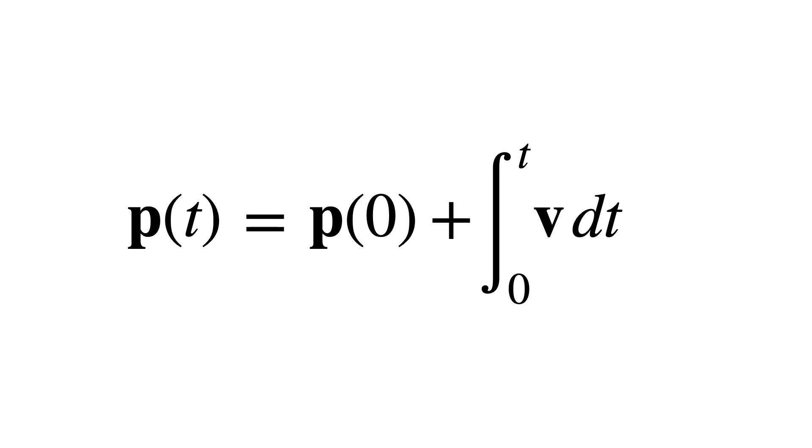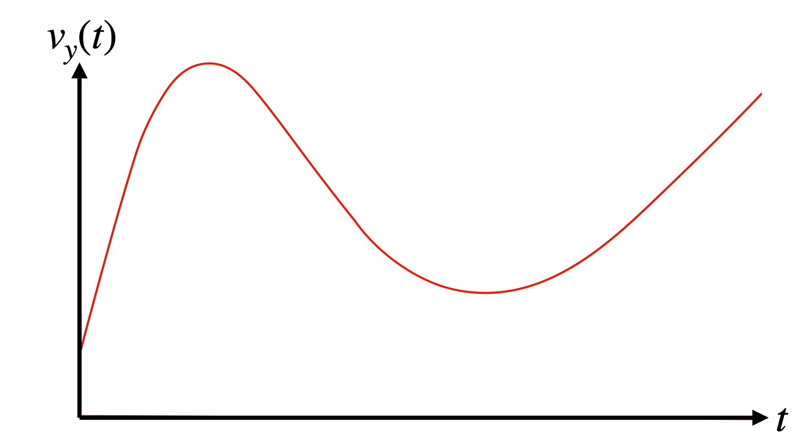That may look complicated, but there's a pretty simple intuition. Let's plot the velocity of the particle over time like this. Here I'm showing only one component of the velocity, the y component, as it's easier to visualize. The others are similar. The integral is the area under that curve.